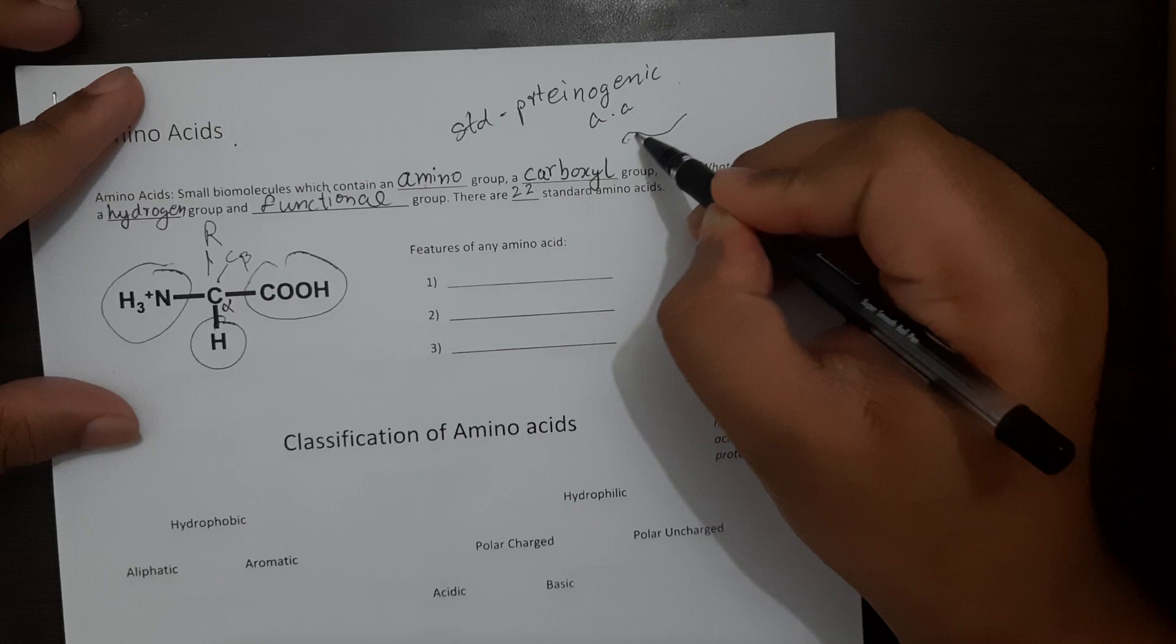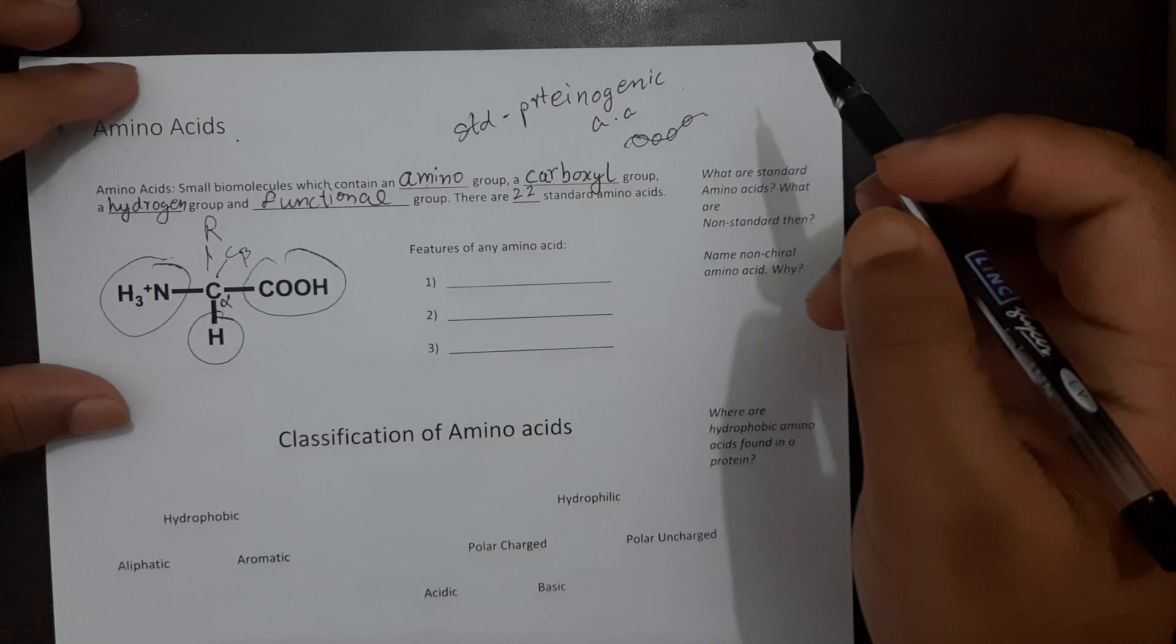This means that these are the amino acids which can be incorporated into the primary structure of a protein during the translation process in the ribosome.